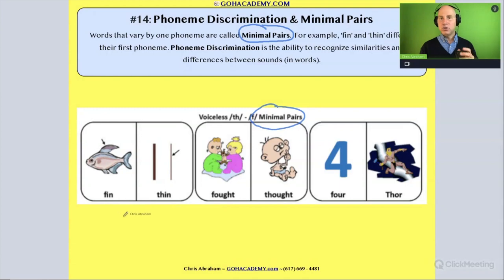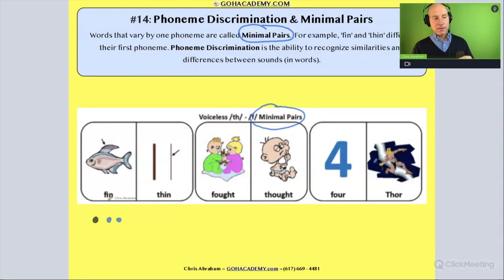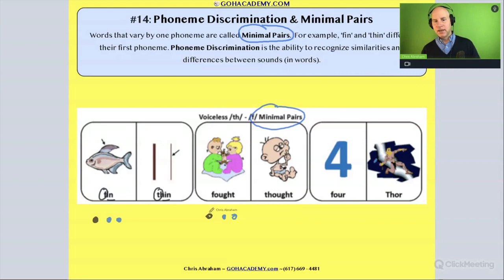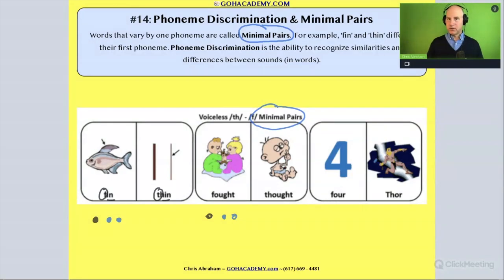With 'fin' and 'thin,' the '-in' sound is the same but the initial sound is different — they rhyme but the first sound differs. Same with 'fought' and 'thought' — they rhyme but the initial sound is different. Or 'four' and 'thor' — that's a good one. So why are minimal pairs so helpful?